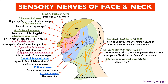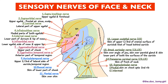The supraclavicular nerve has three branches: the medial branch supplies skin on the chest up to the second rib; the intermediate branch supplies skin on the front of the chest; and the lateral branch supplies skin over the shoulder and the upper half of the deltoid muscle.